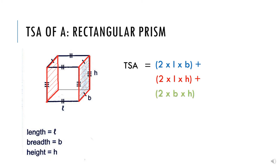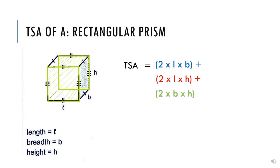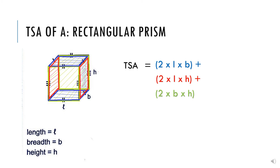We also add 2 times breadth times height, which refers to the other two sides on either side of this prism. In fact, there are six shapes. If you add up all the twos in that formula, you'll see that there are six rectangles or squares that we need to add together. So the formula accounts for all six sides, and we'll have an answer inclusive of all six sides of the prism.